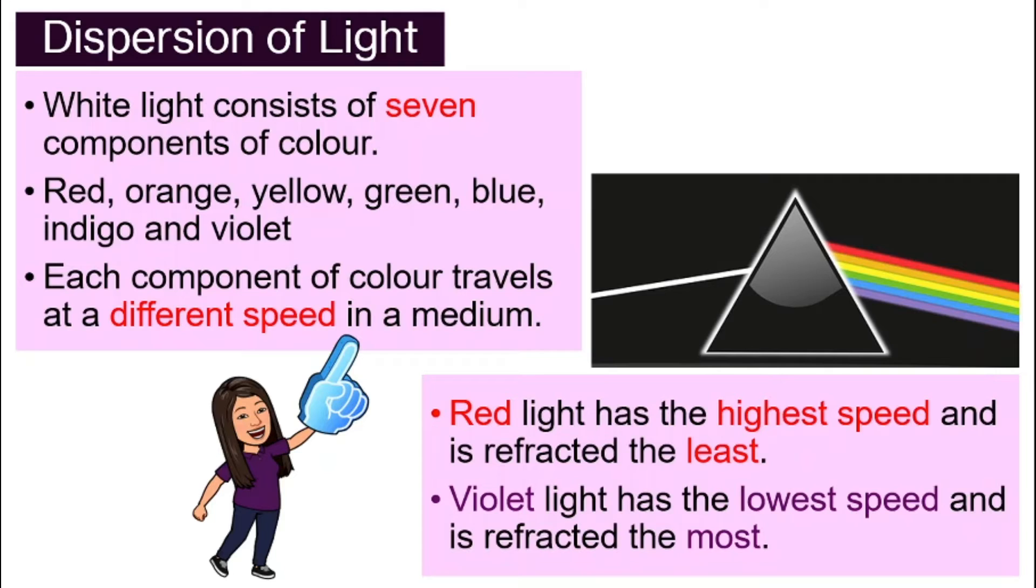And the violet light, however, travel the slowest. And so it is refracted the most. So at the spectrum out here, the one that's being spread out, you see that violet is at the bottom.